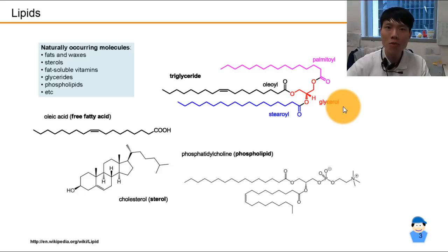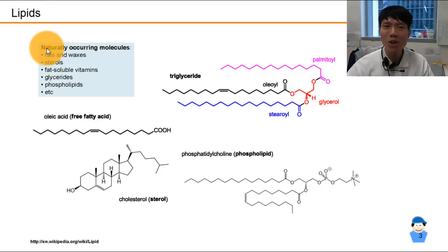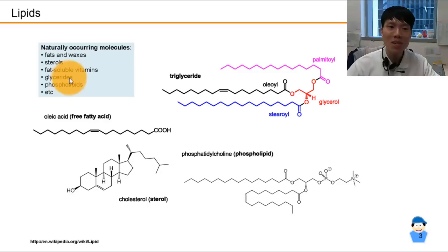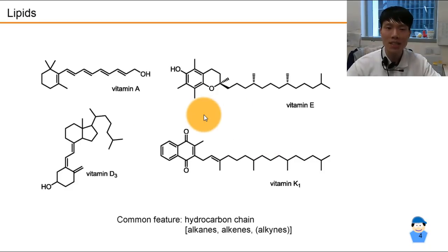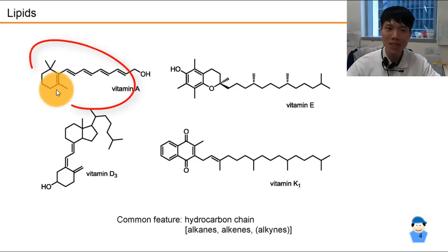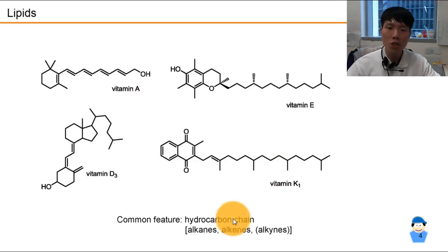These are some examples of molecules that we encounter every day, sometimes even without realizing it. Lipids are fats. We have that on the skin of our body, no matter how strong, fit, or skinny you are. You have to learn what are the naturally occurring molecules: fats and waxes, sterols, fat-soluble vitamins, glycerides, phospholipids. Do not memorize them, but by seeing the structure, you know they are fats because they contain long chains of hydrocarbons that repel water. How do I know they're fatty? I see a lot of carbon without much oxygen, nitrogen, or charged particles — they like oil, because they do not form hydrogen bonding. The common feature for these vitamins is that they contain long hydrocarbon chains — alkanes, alkenes, and sometimes alkynes.